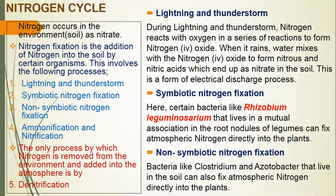Nitrogen circle: Nitrogen occurs in the environment, that is the soil, as nitrate. Nitrogen fixation is the addition of nitrogen to the soil by certain organisms. This process involves: 1. Lightning and thunderstorm. 2. Symbiotic nitrogen fixation. 3. Non-symbiotic nitrogen fixation. 4. Ammonification and nitrification. The only process by which nitrogen is removed from the environment and returned to the atmosphere is 5. Denitrification.